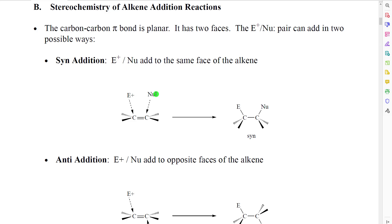In the first possibility, the electrophile and the nucleophile both add to the same face of the alkene — they come from the same direction. As the electrophile adds to a carbon from the top face, an electron pair created as part of the bond to the electrophile would repel the two groups already attached to the alkene down away from it, forming a tetrahedral carbon. Similarly, if the nucleophile adds from the same top face, it would also push the other two substituents down. When the electrophile and nucleophile add from the same face, we call that syn addition.